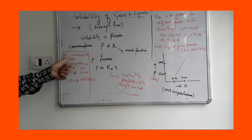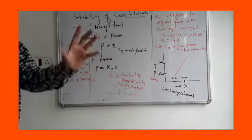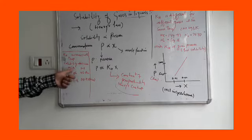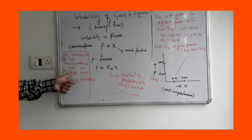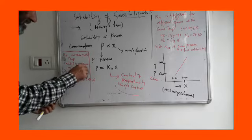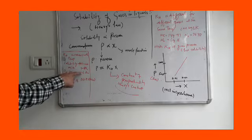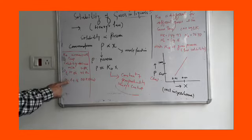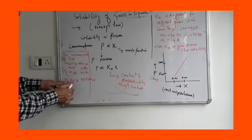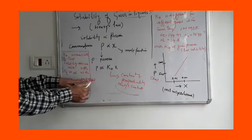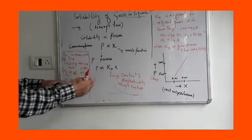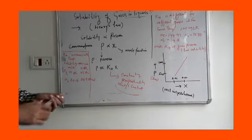For example, for O2 at 293 Kelvin KH = 34.86, and at 303 Kelvin it increases to 46.82. For H2, at 293 Kelvin KH = 69.16, and at 303 Kelvin it becomes 88.84. So if we increase the temperature by 10 degrees, the KH value increases but solubility decreases.